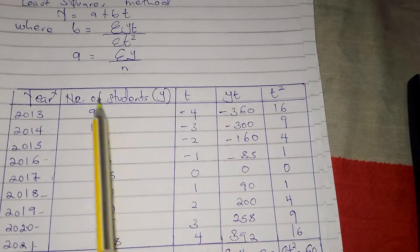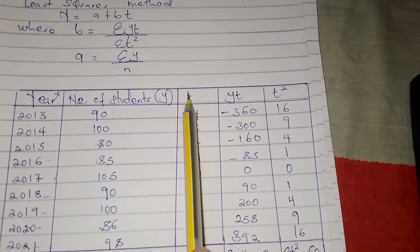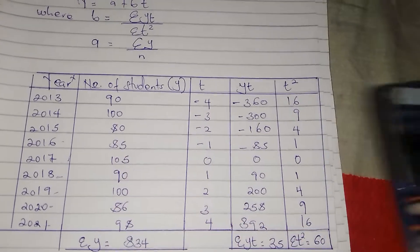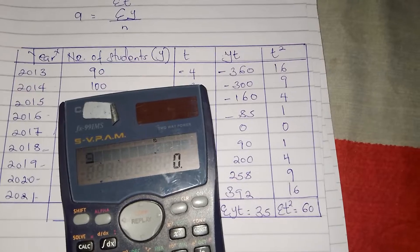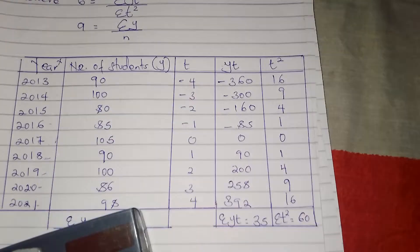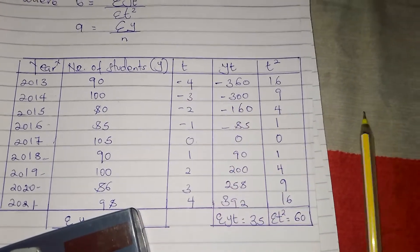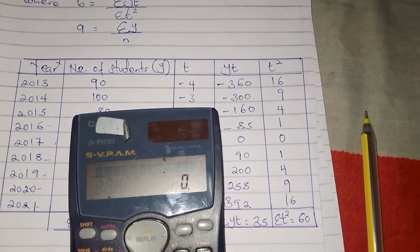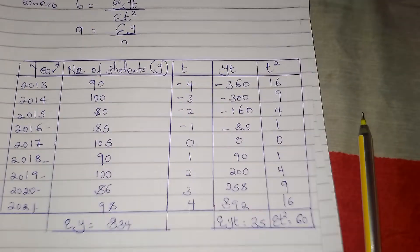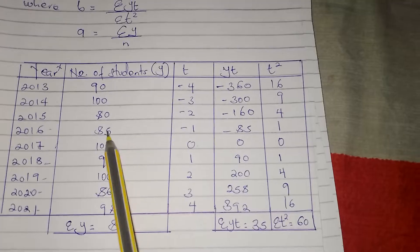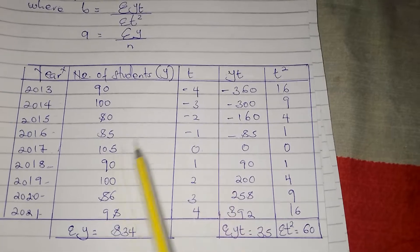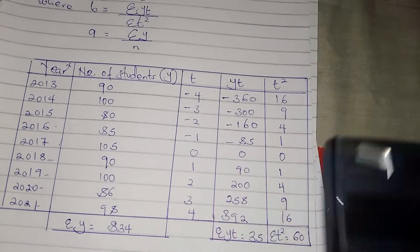For the yt column, the number of students is y, so we get y times t. The first is 90 times negative 4, which gives negative 360. The next is 100 times negative 3, which gives negative 300. We do the same for the rest of the years, multiplying each y value by its corresponding t value.